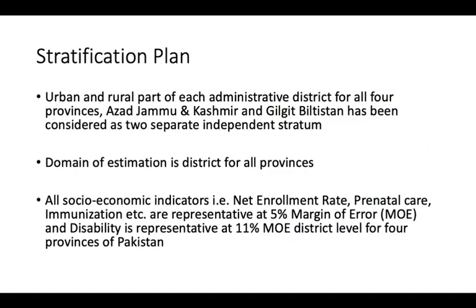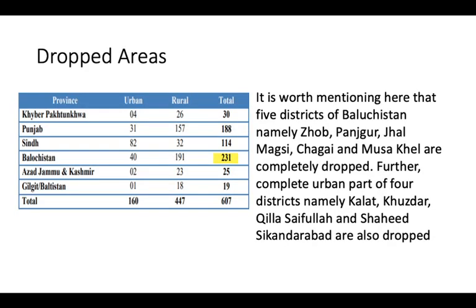The stratification plan divided the urban and rural parts of each administrative district across four provinces. Azad Jammu Kashmir and Gilgit-Baltistan are considered as two separate independent stratums. Data regarding the education sector is lacking in this report for these regions. The domain of estimation was restricted to the districts of all four provinces, with net enrollment rate added for the first time.